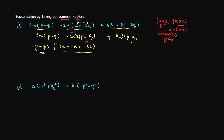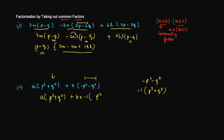Let us see the second problem. We have a·(p²+q²) + b·(−p²−q²). At first look it might seem there is nothing common, but if we look at (−p²−q²) and take out −1 from both terms, we are left with (p²+q²), which is the same multiple as in the first term. So we can write this as a·(p²+q²) + b·(−1)·(p²+q²).